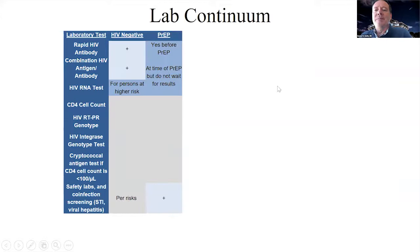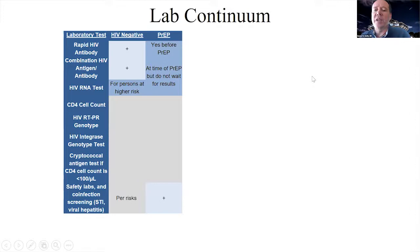For people who should be on PrEP, getting a rapid HIV antibody test is good. At the time of PrEP initiation, we also recommend getting a combination HIV antigen-antibody test or an RNA test. You don't need to wait for those results before going ahead and starting the PrEP. You also need to get safety labs and co-infection screening.